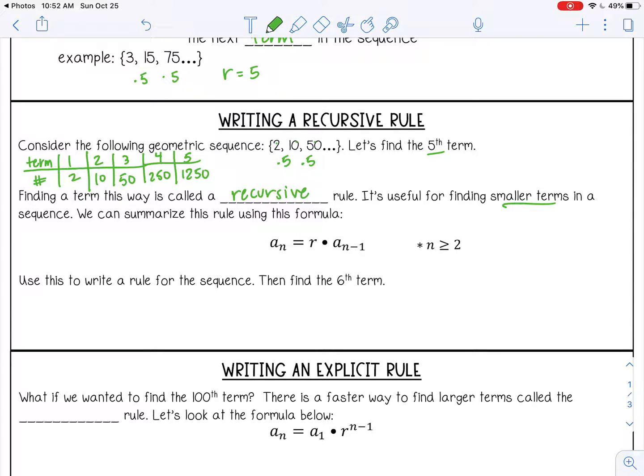Okay, so we can summarize this rule using this formula. So a_n, that's the term we want, equals r times a_(n-1), that means the previous term. So basically, if we want the fifth term, we would use the fourth term here. And this only works when n is greater than or equal to 2. So it's not going to work for the first term.